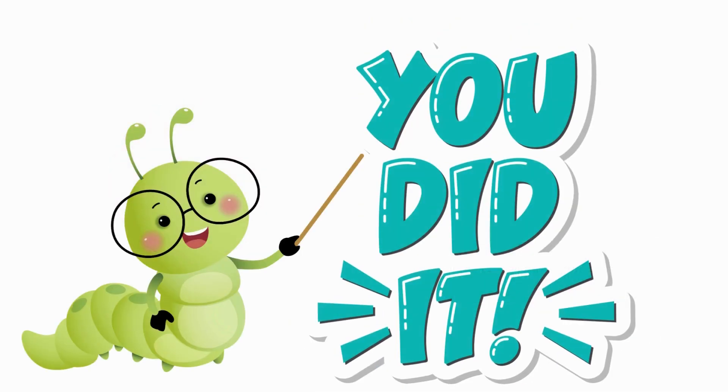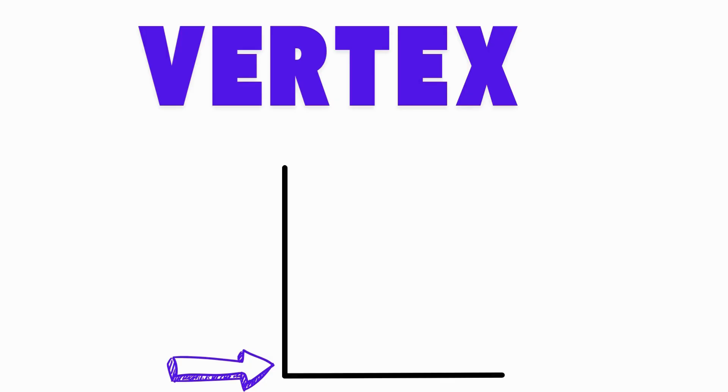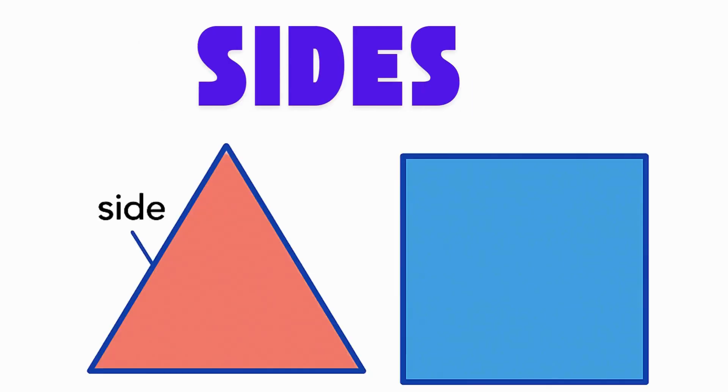You did it, shape explorers. Let's review. A shape that pops out and is not flat is a solid. A place where two sides meet is a vertex. The lines on the outside of a shape are called sides.